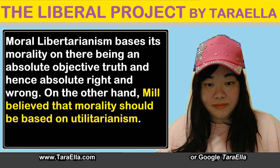Examining the differences between moral libertarianism and Mill's liberalism in more detail, we can see that moral libertarianism bases its morality on there being an absolute objective truth, and hence absolute right and wrong, and everything is geared towards making sure that the wrong does not suppress the right. On the other hand, Mill believed that morality should be based on utilitarianism, which could mean that despite his belief in objective truth, when it comes to moral standards there can indeed be culturally-based variations. This is consistent with his view that liberalism is only suited to so-called civilised societies, something that moral libertarians would not accept.